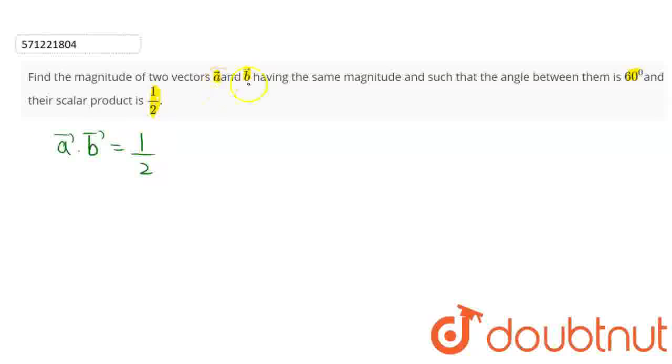And they are having same magnitude, so that means mod of A vector, that is magnitude of A vector, is equals to magnitude of B vector. Now angle between these two vectors is given as theta equals to 60 degrees.